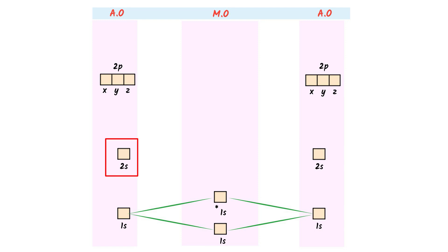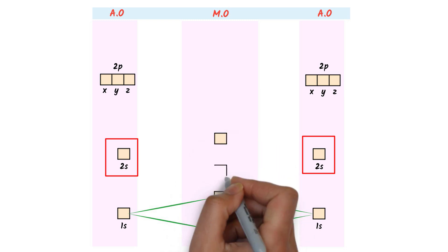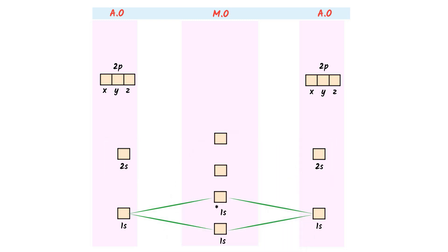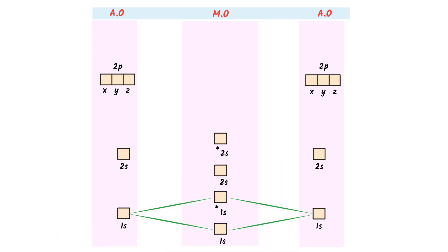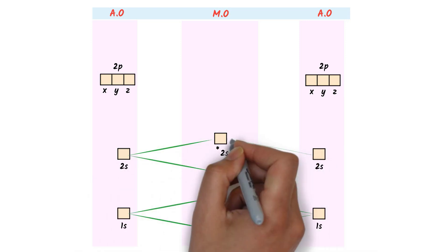Similarly, this 2s atomic orbital and this 2s atomic orbital combine together to form two molecular orbitals. I write the 2s bonding molecular orbital and the 2s anti-bonding molecular orbital. I put a star on the 2s anti-bonding molecular orbital and draw the two lines.